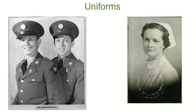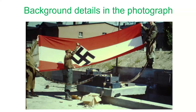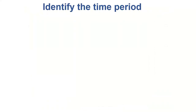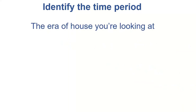Another thing to look at when dating a photograph is what's in the background. Here we have one found in my wife's father's old slides — he's the individual on the left holding a Nazi flag. He served in Germany right at the end of World War II. The captured armaments and the flag help date when that picture was taken. Some other things: a lot of photographs are taken in front of houses — what era is that house? Is it a log cabin, a craftsman-style house popular at the end of World War II, or a more modern house?